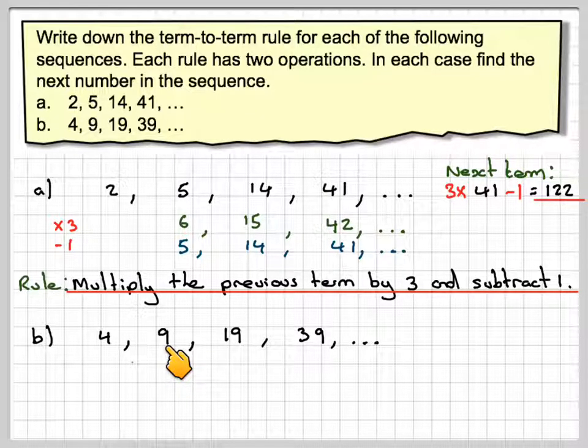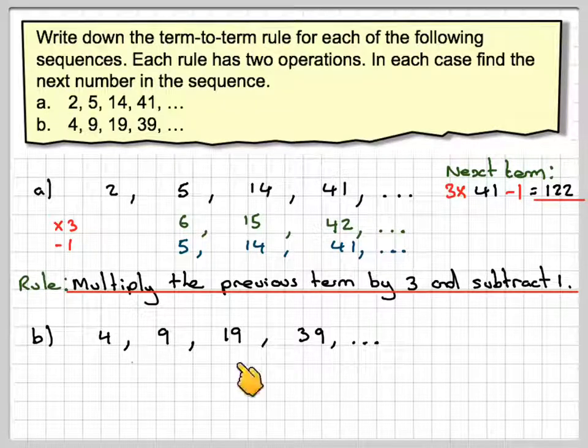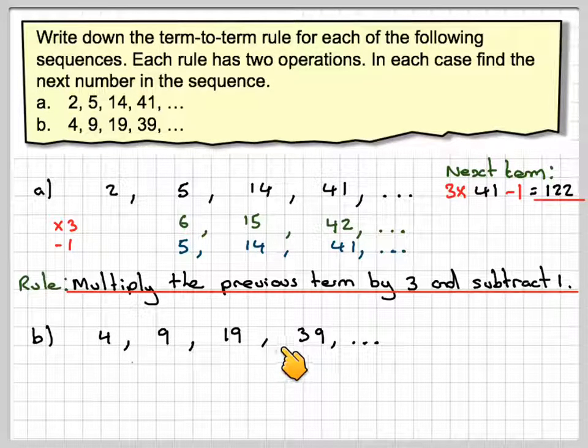Let's try the next one. 2 times 9 gives me 18. 18 plus 1 will give me 19. 2 times 19 will give me 38, but if I add 1, I get 39. So it looks like I've found the rule.